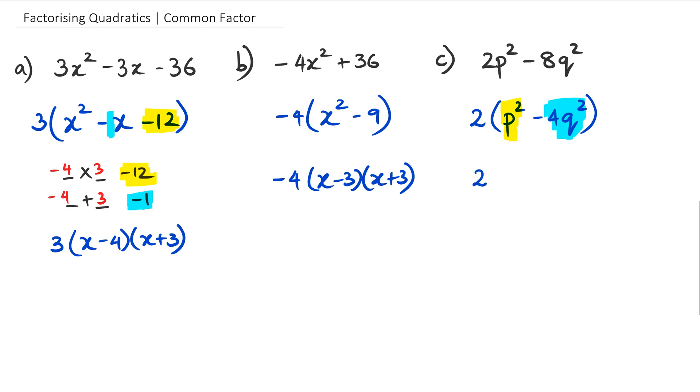So then what we're going to do is leave that 2 outside. We're going to put up two brackets. And our first term is going to be P and P. And we're going to have one of them as minus and the other one as plus. And of course, square root of 4 is 2, square root of Q squared is Q. So this is going to end up looking like 2Q.